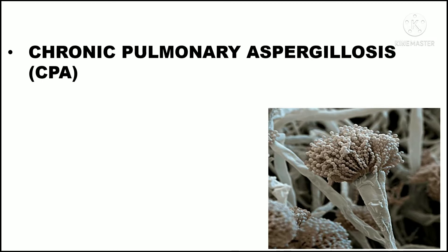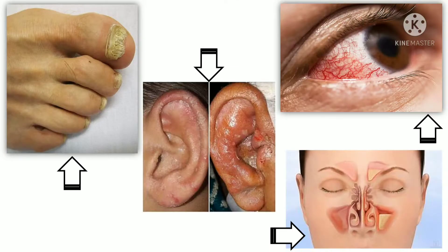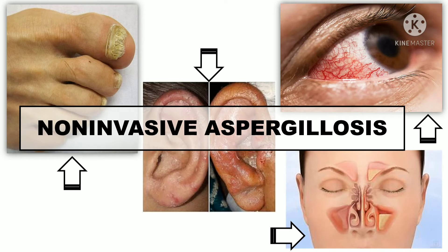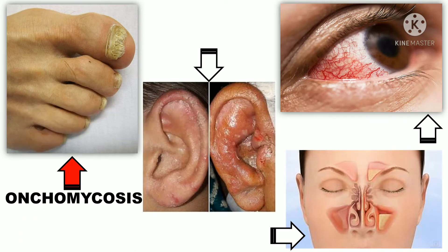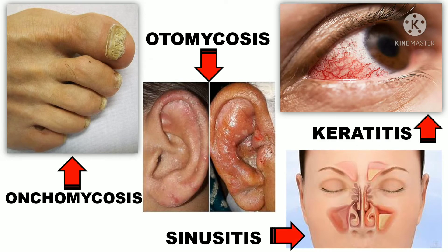There are two types of aspergillus infection. The first is invasive aspergillosis, which includes chronic pulmonary aspergillosis, allergic bronchopulmonary aspergillosis, and aspergilloma. The non-invasive types of aspergillosis include onychomycosis (nail infection), otomycosis (ear infection), ocular infection (eye infection), and sinusitis.